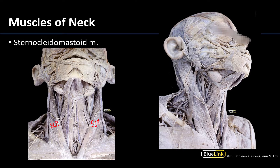It will have its more inferior attachments on the manubrium of the sternum — which you can't quite see here, but you can see the tendon extending there — as well as the clavicle. Thus: sterno meaning sternum, cleido meaning clavicle, and then of course that mastoid up here is the superior attachment.